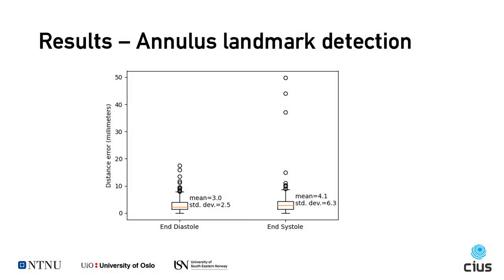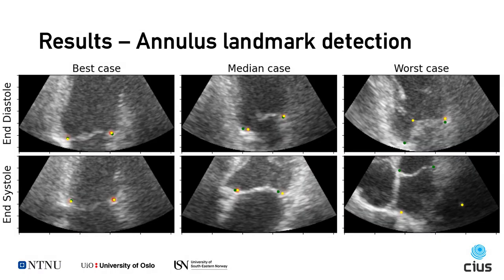The average distance error for end-diastole was 3 mm, and for end-systole it was about 4 mm. But as we can see in these box plots, there are quite a few outliers. By sorting the images in terms of distance error, we can visualize the best, median, and worst-case results for both end-diastole and end-systole. The green points are the true annotated landmarks, while the yellow points are the predicted landmarks. The two worst cases illustrate examples of the outliers, and the biggest error is an unfocused 4-chamber image, which is most likely due to our dataset having mostly left ventricle-focused views.